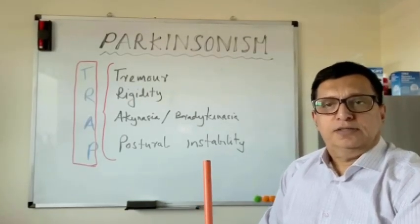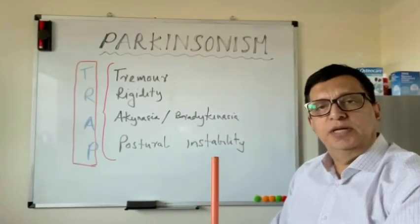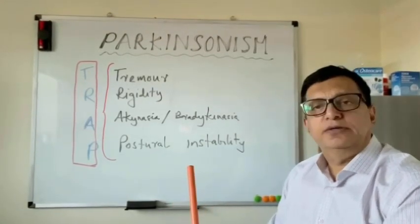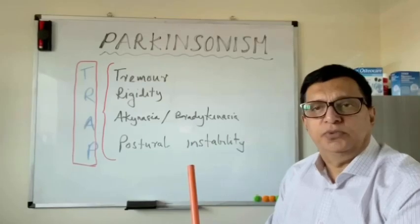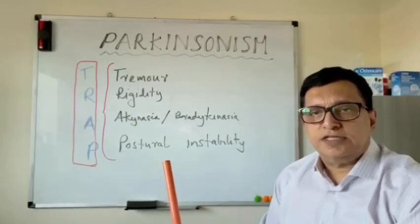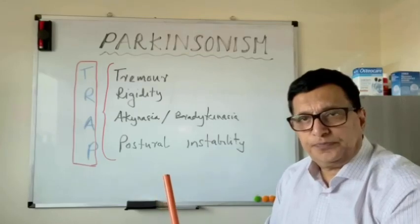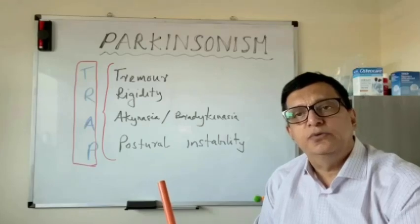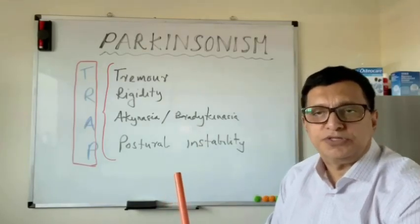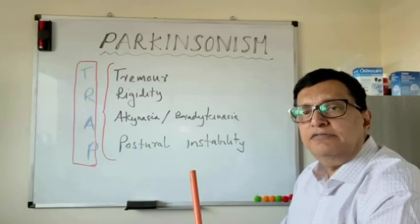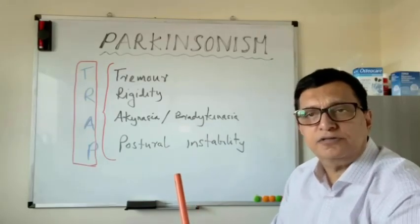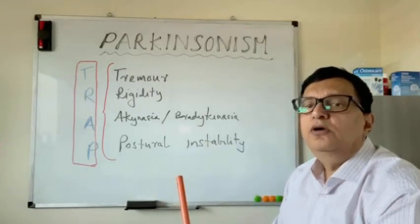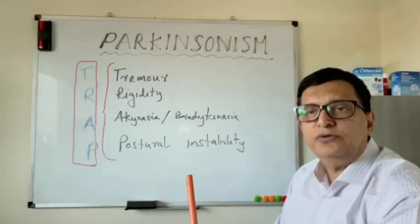In our previous lecture we discussed about dementia. Dementia is the most common neurodegenerative condition in the aging population, and today we are going to discuss about Parkinsonism, which is the second most common neurodegenerative condition in the aging population. The prevalence is 150 cases per 100,000 and there is a male predominance over females at 1.5 to 1.